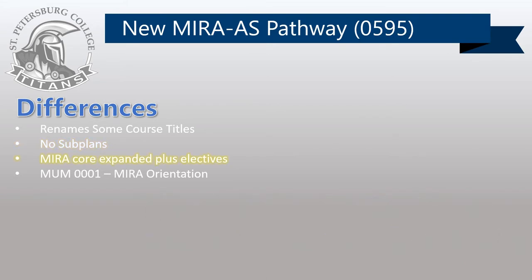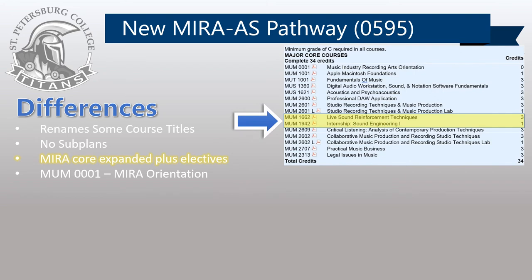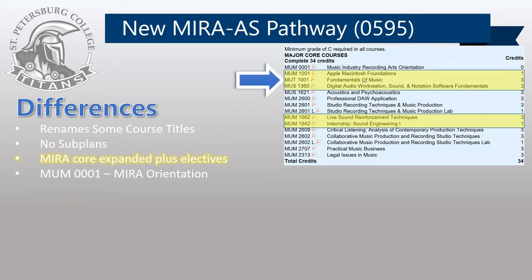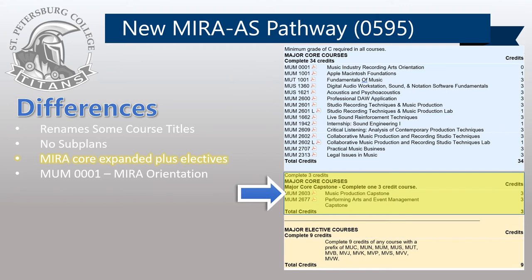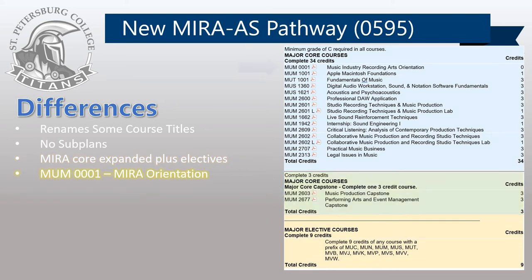Third, it increases the MIRA core content. Live sound and live sound internship is now required of all MIRA students — a change for students under the prior performance and composition subplans. The courses Fundamentals of Music, Apple Mac Foundations, and the course previously called Music and Computers are now part of the MIRA core, making them all financial aid eligible and allowing students to declare MIRA AS as a major from their first semester. The plan also includes a choice of capstone options: MUM-2603, previously called Music Technology and Recording Techniques 4, still exists as Music Production Capstone. Alternatively, students may choose MUM-2677, Performing Arts and Event Management, as their capstone. Fourth, we add a formal MIRA Orientation course in the first semester of the program.